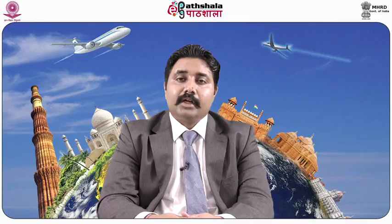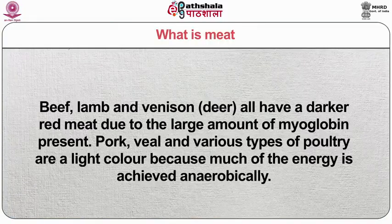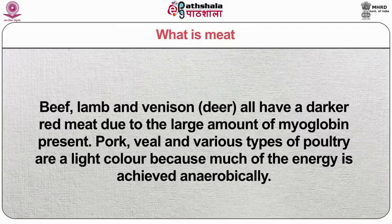Certain cuts that have an obvious grain can be extremely tough if the cut is made with the grain as opposed to across it. The color of muscle fiber depends on the type of muscle and its species. The red pigment is due to myoglobin, a protein that holds oxygen to the muscle. Beef, lamb and venison all have a darker red meat due to the large amount of myoglobin present. Pork, veal and various types of poultry are a lighter color because much of the energy is achieved anaerobically.